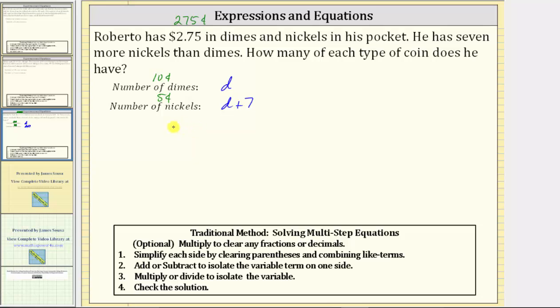Now we'll write an equation based upon the values of the coins. Each dime is worth 10 cents and therefore the value of the dimes is 10 cents times d or just 10d plus the value of the nickels is 5 cents times the quantity d plus seven or just five times the quantity d plus seven.